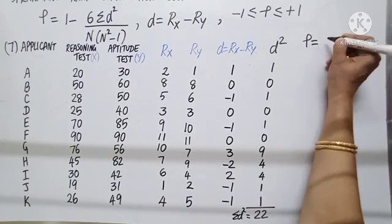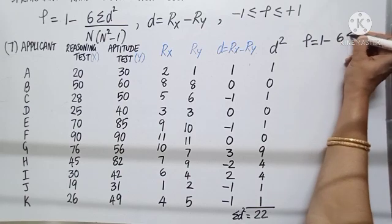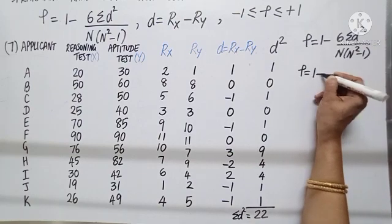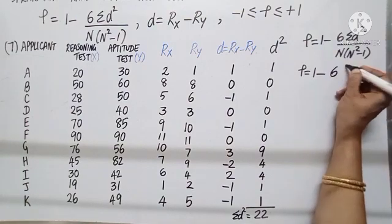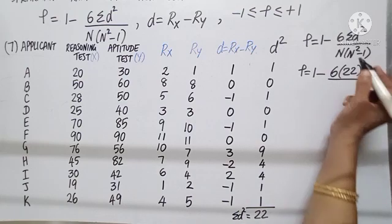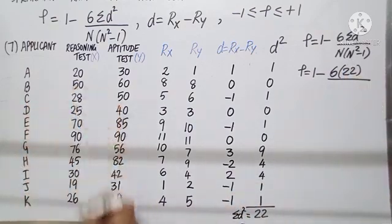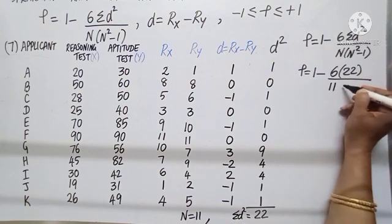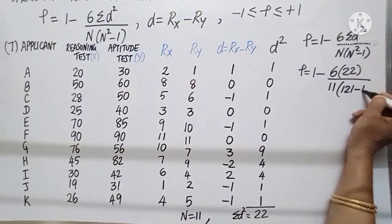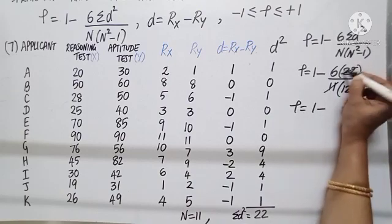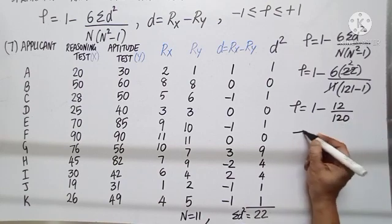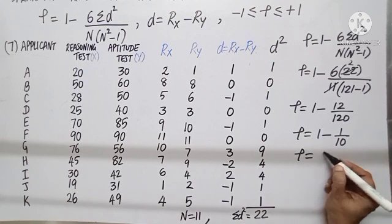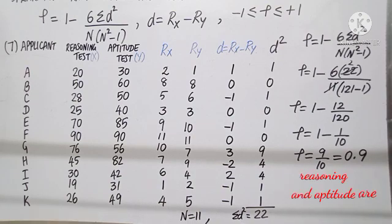As I substitute in the formula, rho is 1 minus 6 into sigma D squared, which is 22, divided by N. N represents the number of data; we are given 11, so N equals 11. That gives 11 into (11 squared minus 1), which is 11 into 120. Simplifying, it is 1 minus 132 by 1320, which is 1 minus 12 by 120, or 1 minus 1 by 10. That is 10 minus 1 over 10, giving rho equals 9 by 10, which is 0.9.